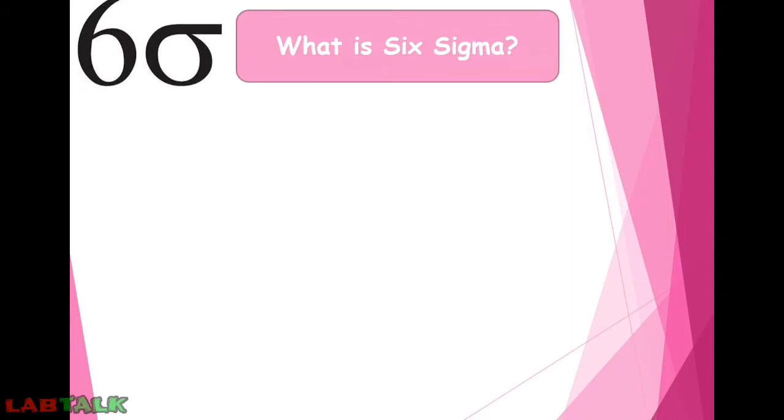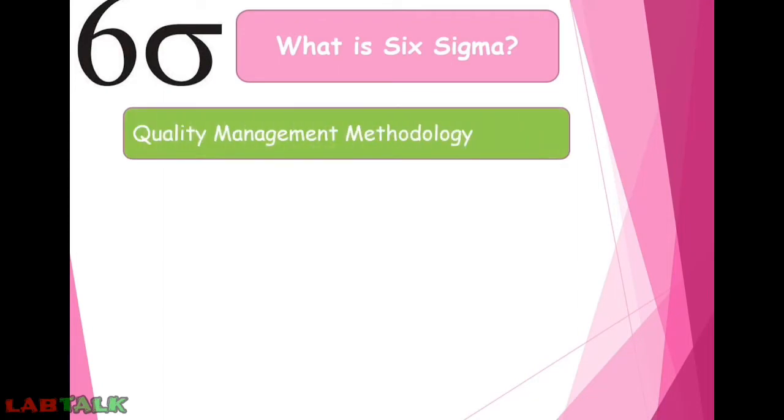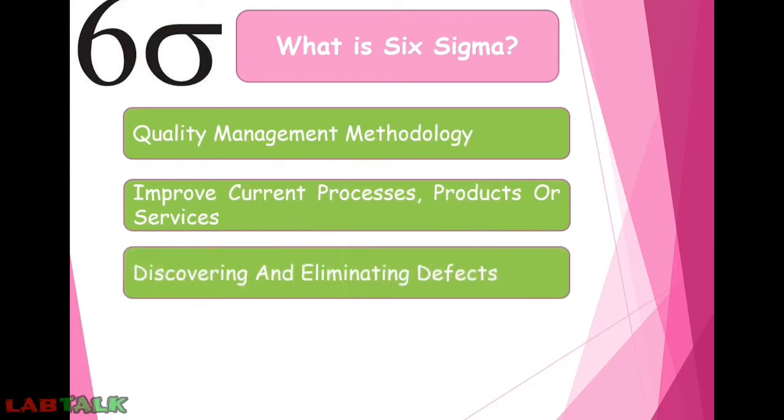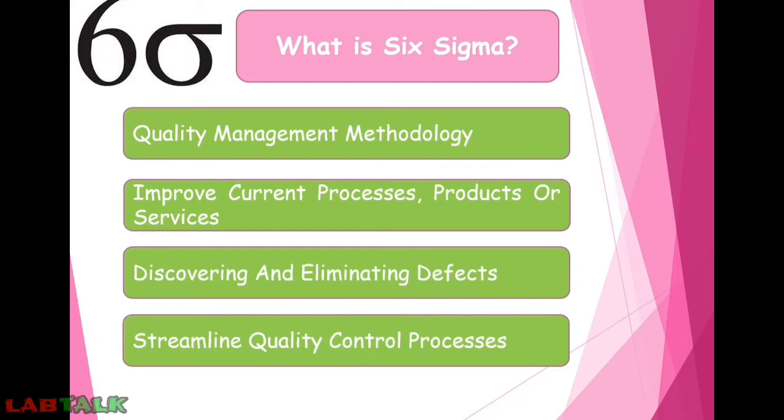First, let us see what is Six Sigma. Six Sigma is a quality management methodology used to help businesses improve current processes, products or services by discovering and eliminating defects. The goal is to streamline quality control in manufacturing or business processes so there is little or no variance throughout.